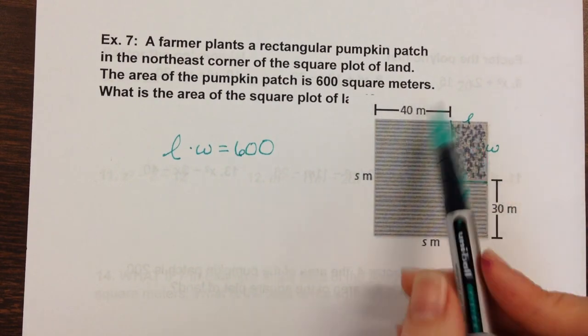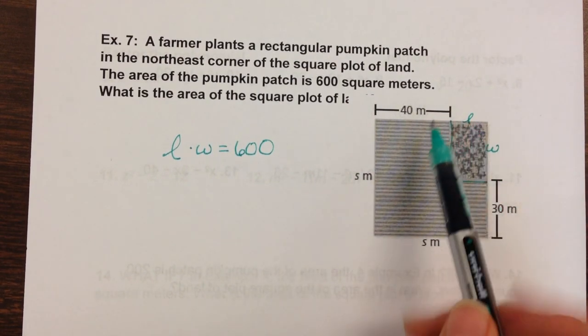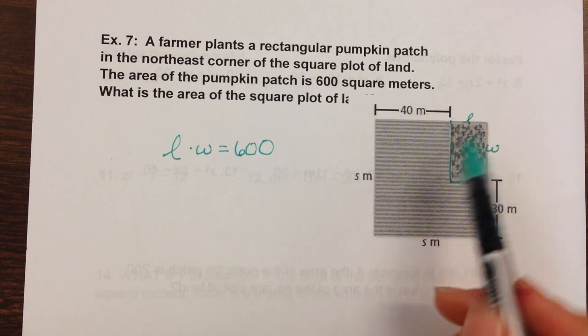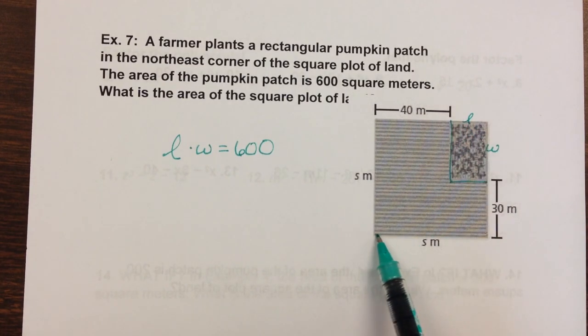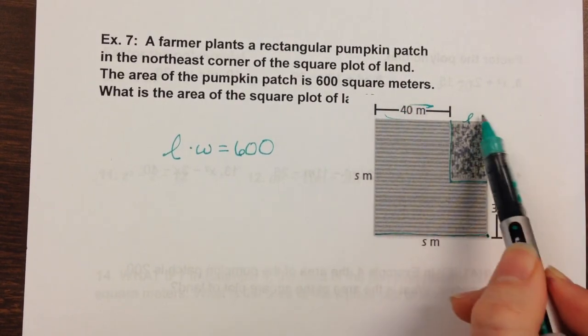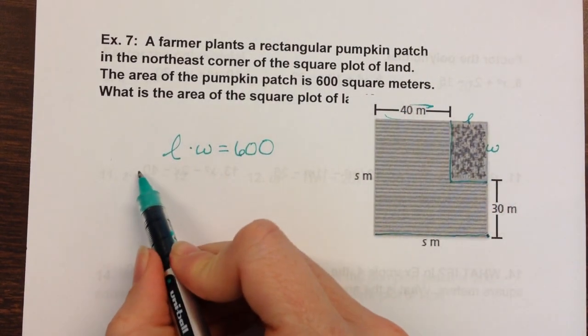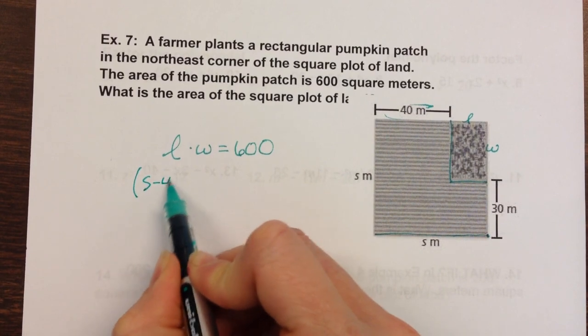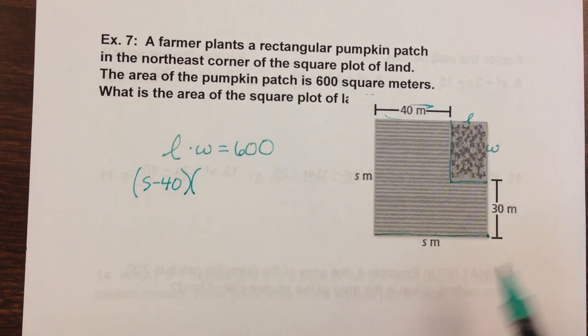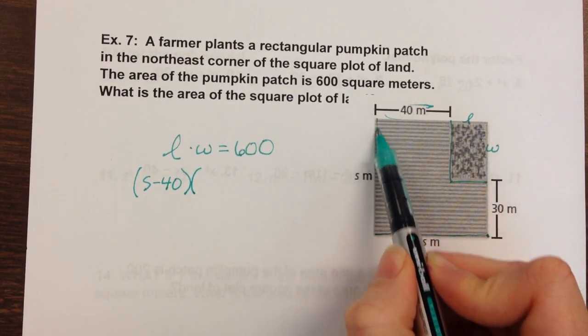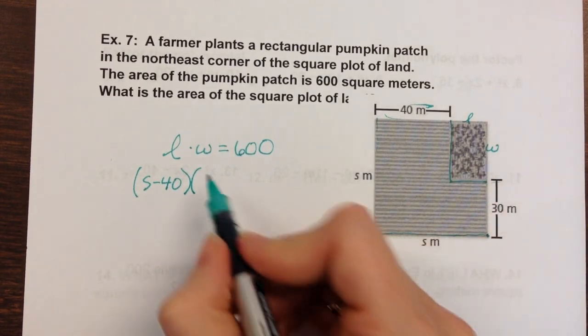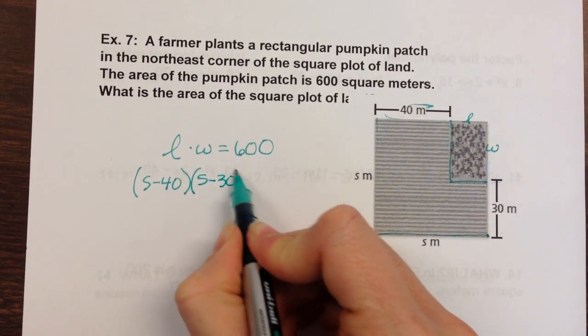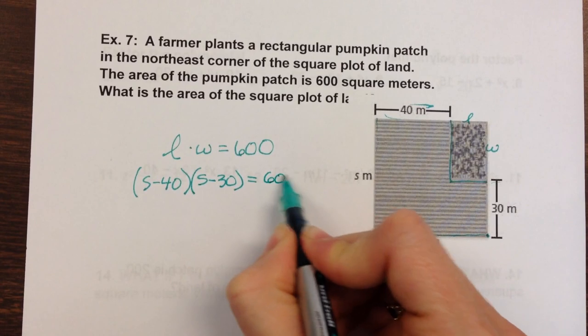So then I can take however big this is. It's s is the whole thing, but if I took off 40, it would equal the length. So I'm going to say s minus 40 times the width, so it looks like s minus 30 is equal to 600.